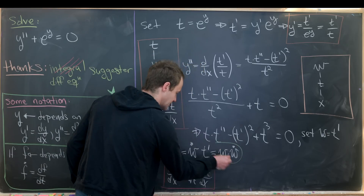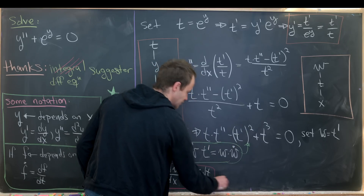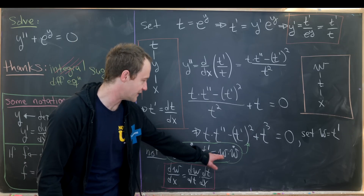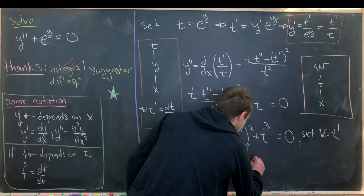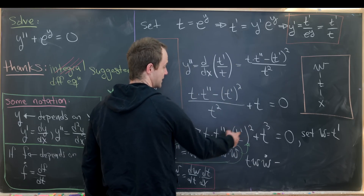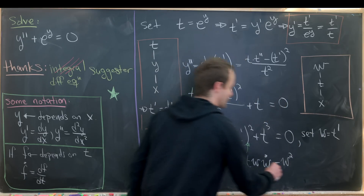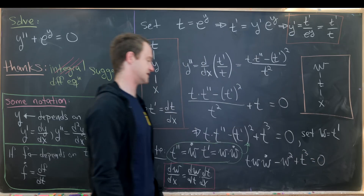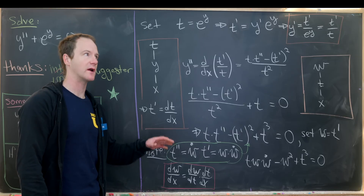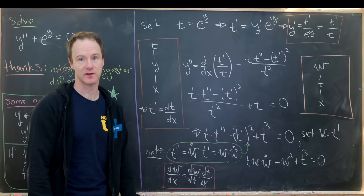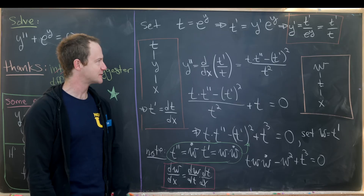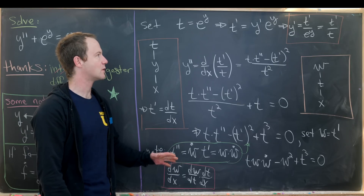Plugging into our equation, replacing t double prime with w dot and t prime squared with w squared, we get t times w times w dot minus w squared plus t cubed equals zero. That's a first order differential equation where w is the dependent variable and t is the independent variable. It's still nonlinear because we have w squared, but perhaps we can do another substitution to get rid of that.